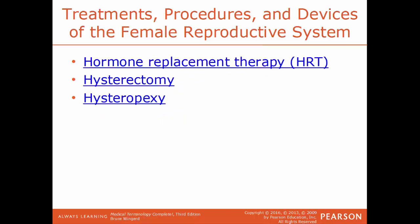HRT, hormone replacement therapy, is when a woman is given hormones artificially because her body doesn't make them anymore — such as estrogen and progesterone in women who are postmenopausal. The body just doesn't make them in adequate levels anymore. Sometimes this lack of estrogen and progesterone can cause some women problems, so by taking an artificial source of these hormones, this will help to treat those problems.